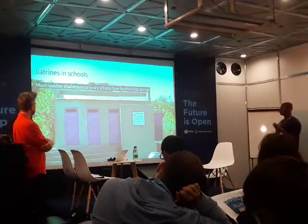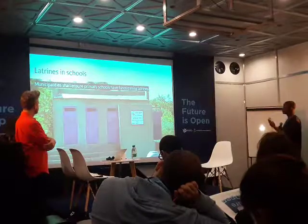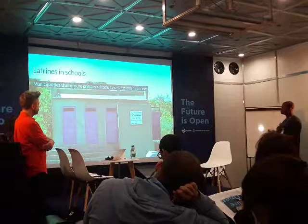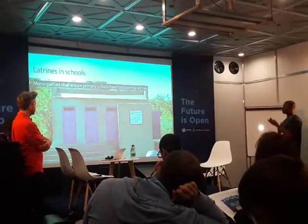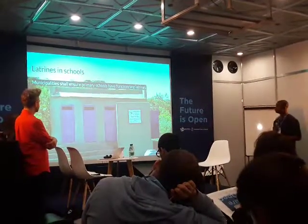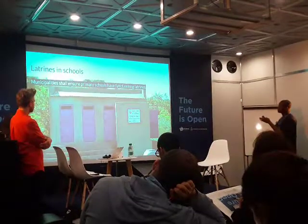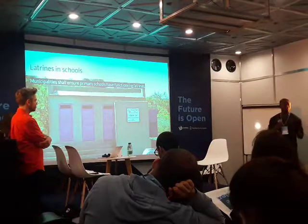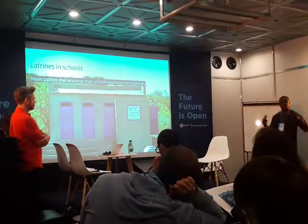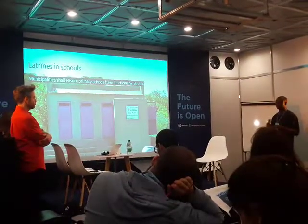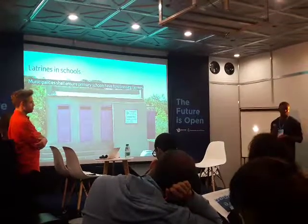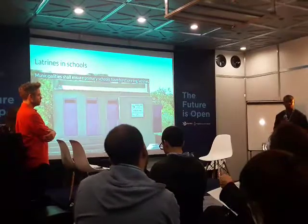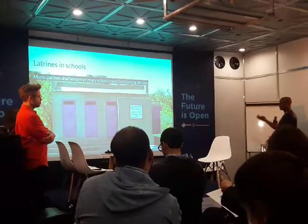The first and important indicator is about latrines. We want to see whether municipalities are able to build latrines for each school, because it's very important — you can imagine a classroom acting without a toilet. We need to make sure that each school has a toilet.